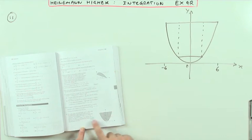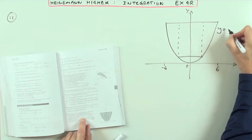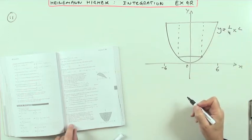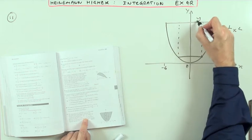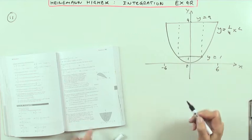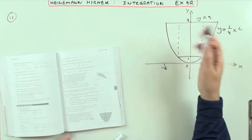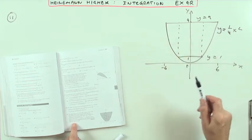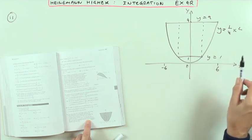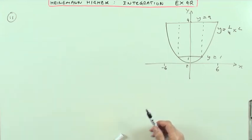The equations of the curves and lines are all given. You've got a parabola with the equation y equals a quarter x squared. It lies between the lines y equals 9 and y equals 1, so it intersects at those values. x goes from negative 6 to 6. Find the area of the cross section and the volume — the tunnel is 60 metres long, so those words matter. What's the volume of this prism?